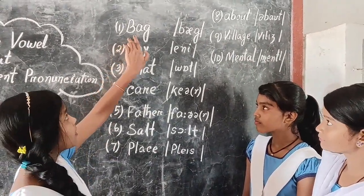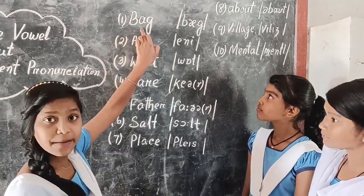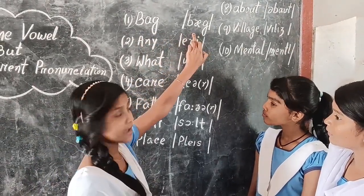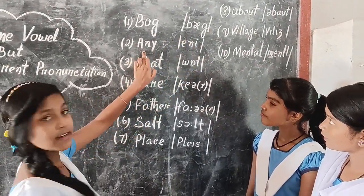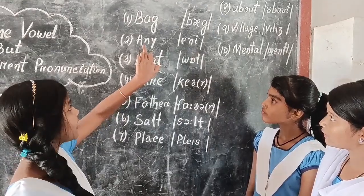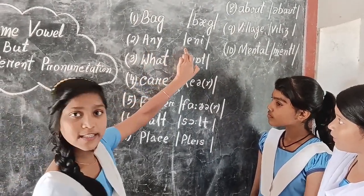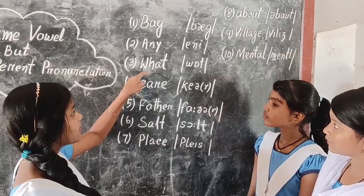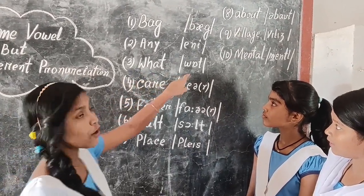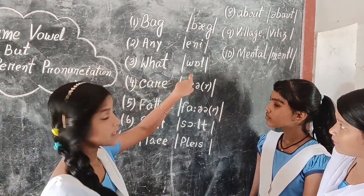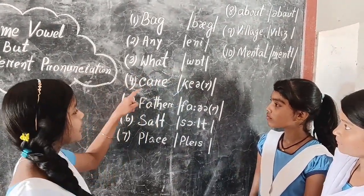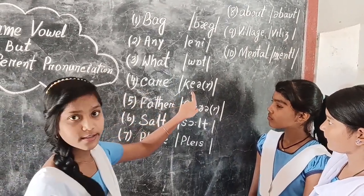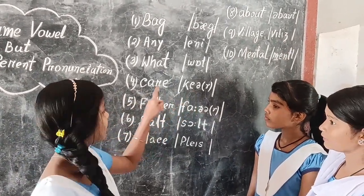Here, 'bag' — the 'a' represents the sound 'an', so this is bag. 'Any' — here 'a' represents 'a', so this is any. 'What' — here 'a' represents a short 'o', so this is what. 'Care' — here 'a' represents 'air', so this is care.